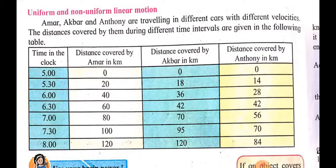When an activity is given: Amar, Akbar, and Anthony are travelling in different cars with different velocities. The distances covered by them during different time intervals are given in the following table, at the same time intervals.